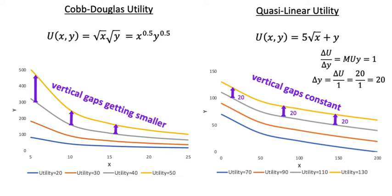More generally, indifference curves in quasi-linear will be horizontal or vertical translations, depending on which axis the linear good is plotted on. In this particular case, the curves are vertical translations, since the linear good y is on the vertical axis.